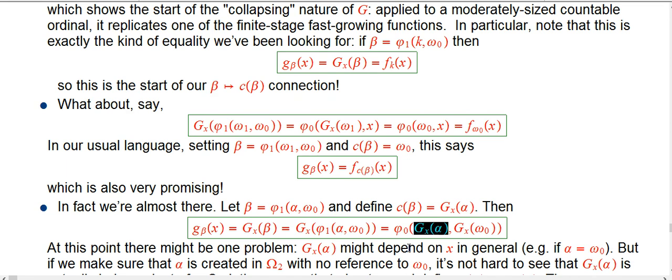Because we want the c of beta, gx of alpha. We don't want that to depend on x. It doesn't make any sense. We want that to be just some fixed ordinal that goes into the control slot of f.